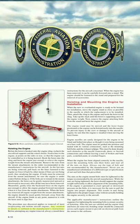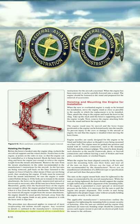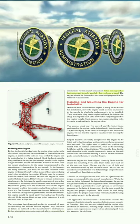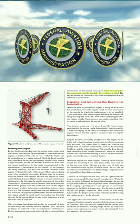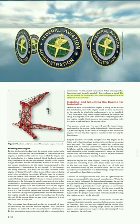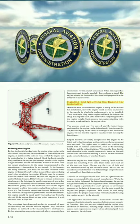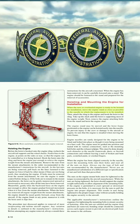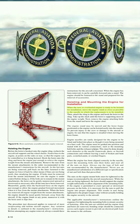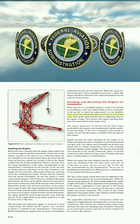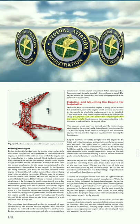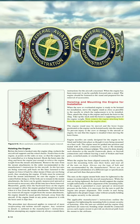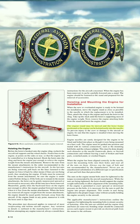Any variation in details is outlined in the manufacturer's instructions. Before attempting any engine removal, always consult these instructions for the aircraft concerned. When the engine has been removed, carefully lower it onto a stand and fasten it to the stand, then prepare it for the removal of accessories. When the new or overhauled engine is ready to be hoisted for installation, move the engine stand as close as possible to the nacelle in which the replacement is to be installed. Attach the sling to the engine and hook the hoist to the sling, taking up the slack until the hoist is supporting most of the engine weight.